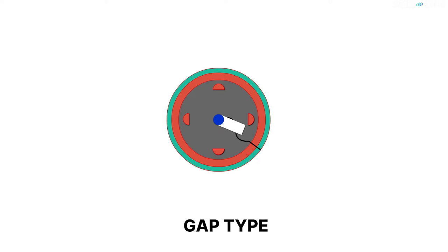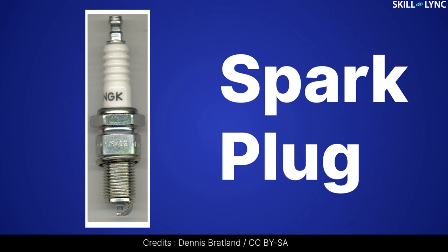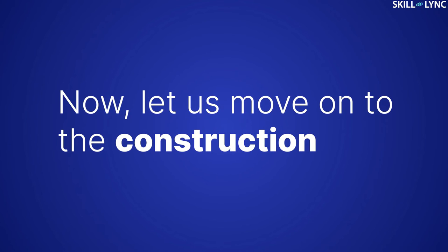On the other hand, if there is a gap between the rotor arm and the electrodes, then it is said to be a gap type distributor. Next to the distributor, we have spark plugs which ignite the air fuel mixture. Now, let's move on to the construction.